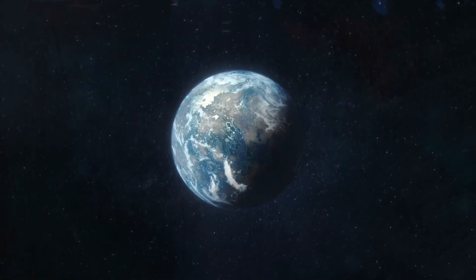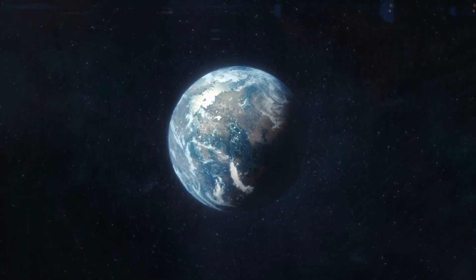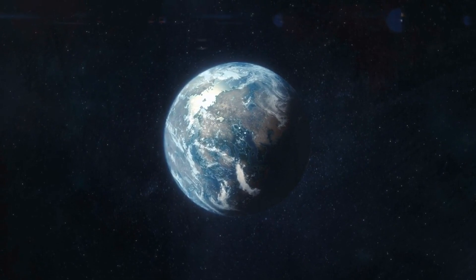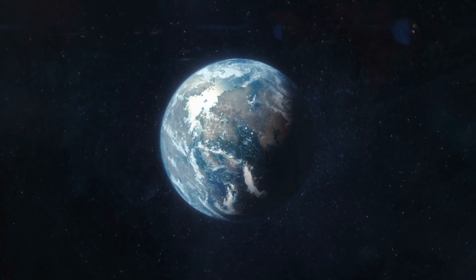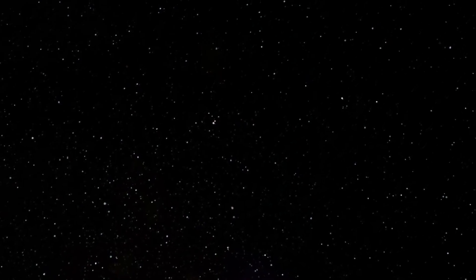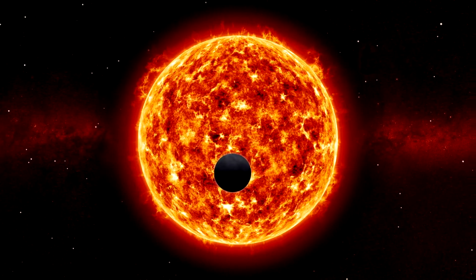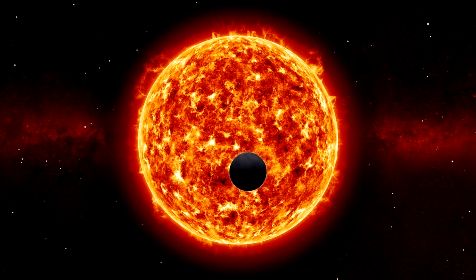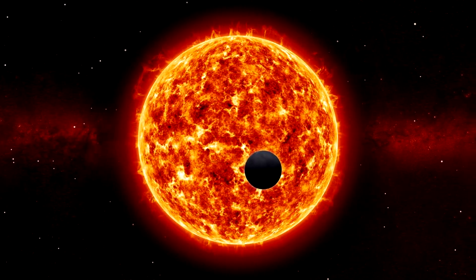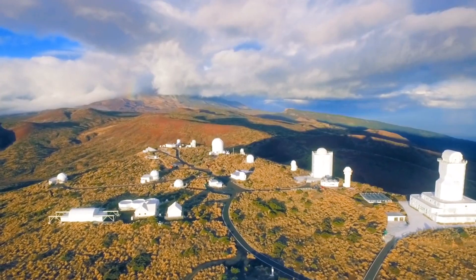The first exoplanets were found in the 1990s, and today there are more than 3,000 confirmed planets that orbit far-off stars. However, only about a dozen of these have been directly imaged. The majority of exoplanets are so far away that they can only be seen when their host star's light dims as the planet passes in front of it. Webb, however, is altering that.